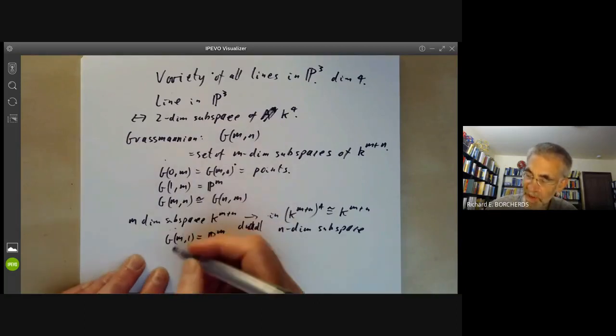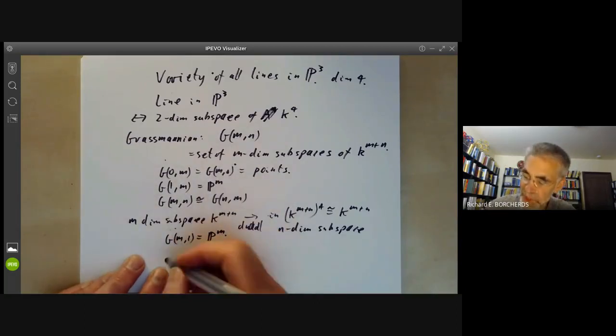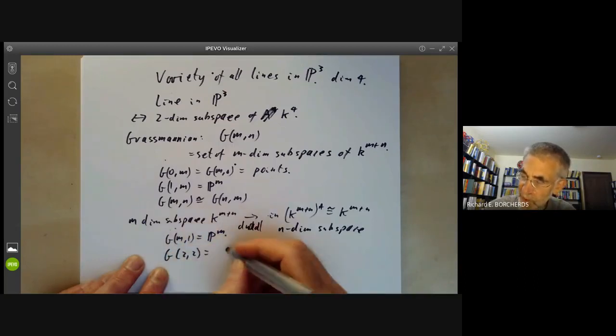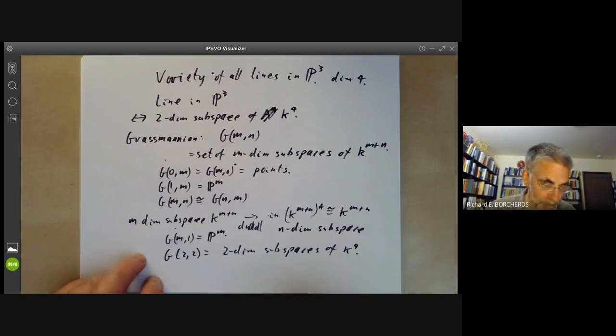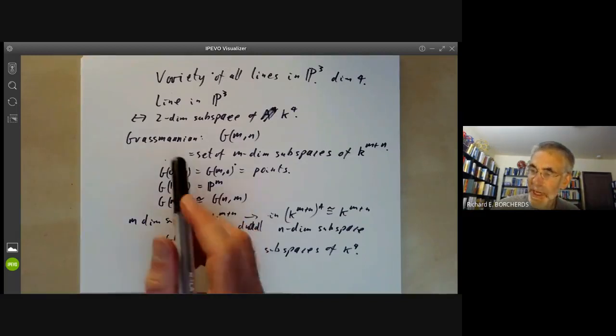So we see in particular that GM1 is also isomorphic to M-dimensional projective space. So the first non-trivial case that isn't a point or projective space is G2,2, which is equal to the two-dimensional subspaces of K4.